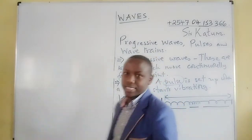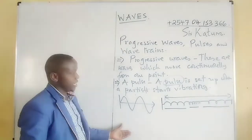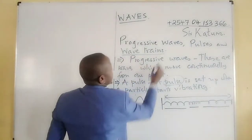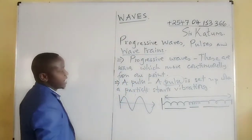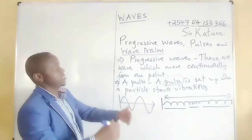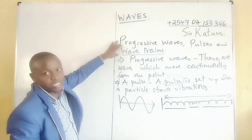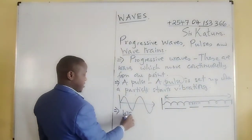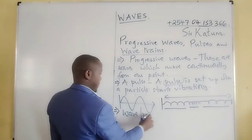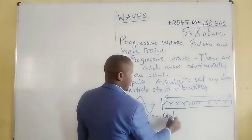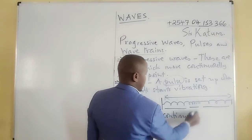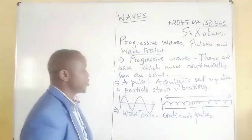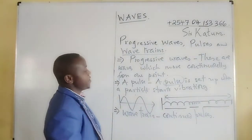Continuous pulses in the generation of a wave result in what we call a wave train. So, continuous generation of waves results in what we are calling a wave train. A wave train is simply continuing pulses — continuous pulses result in what we call a wave train.